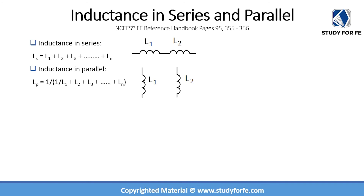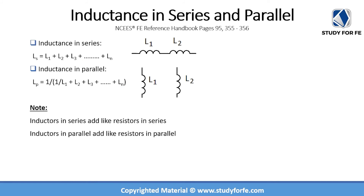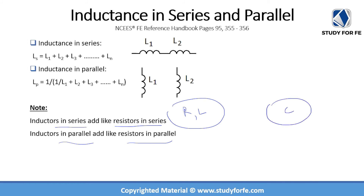When inductors are arranged in series they behave like resistors in series — the inductances simply add up. When inductors are arranged in parallel they behave like resistors in parallel. In summary, inductors and resistors follow the same rules for series and parallel combinations, whereas capacitors are the exception: capacitors in series behave like resistors in parallel, and capacitors in parallel behave like resistors in series.